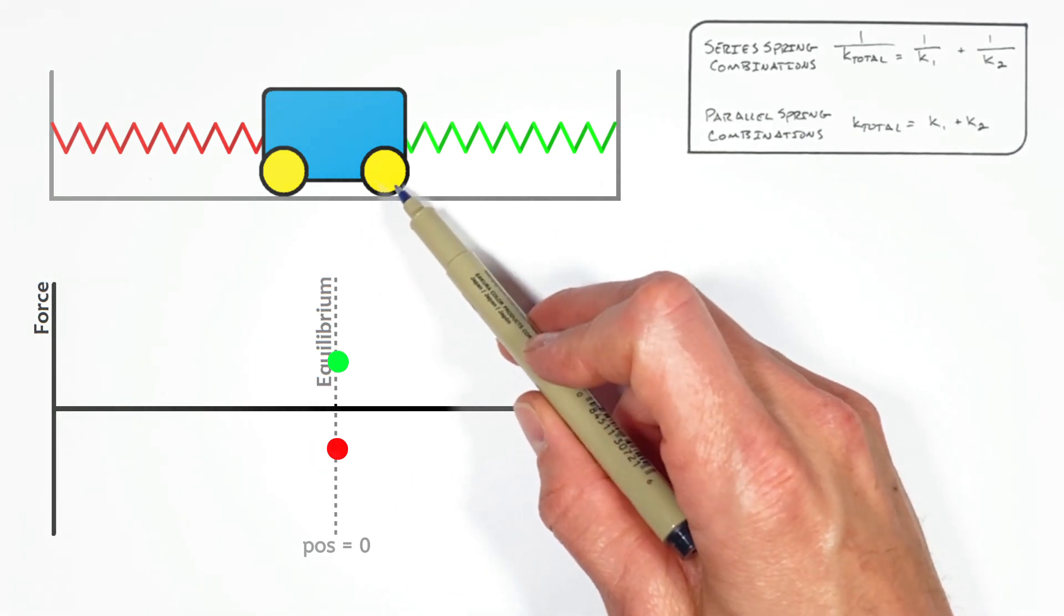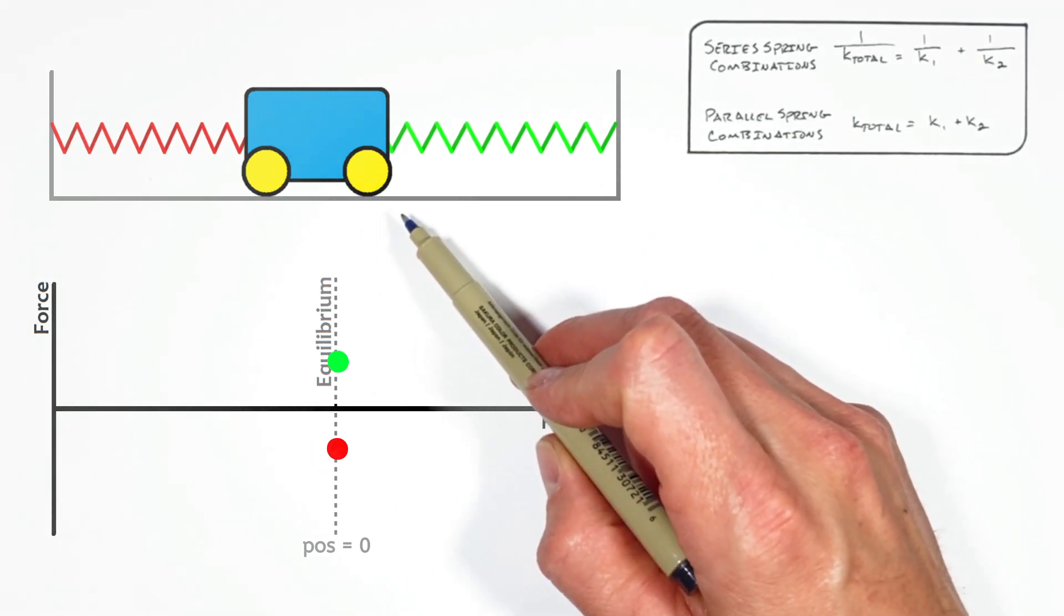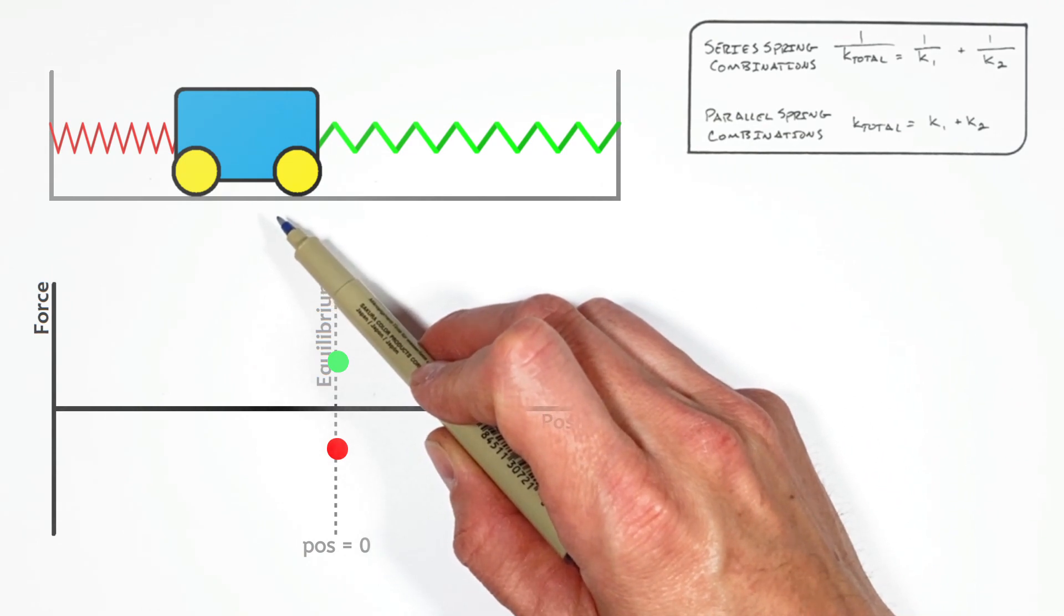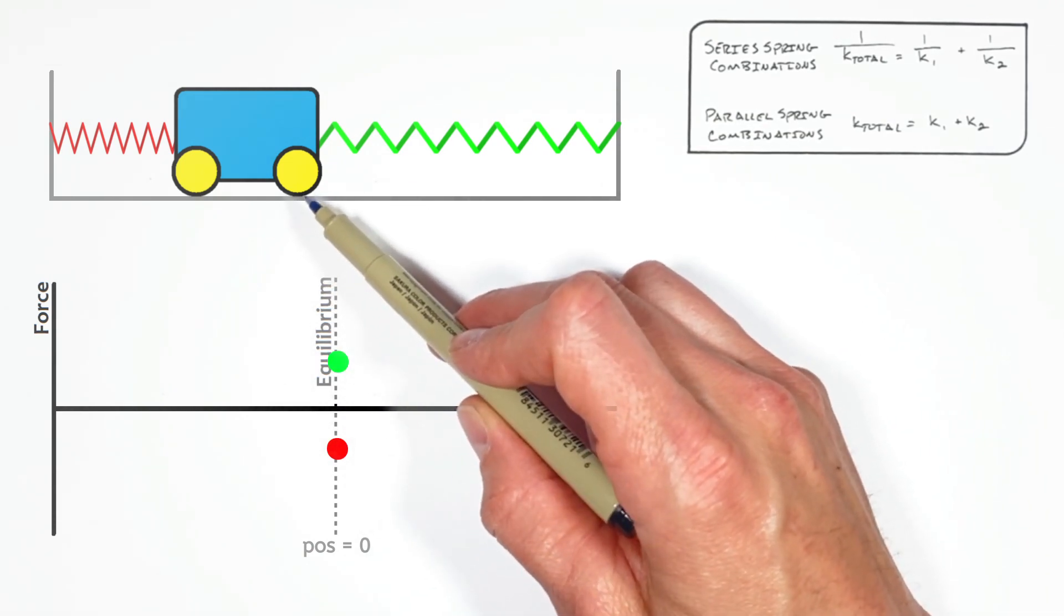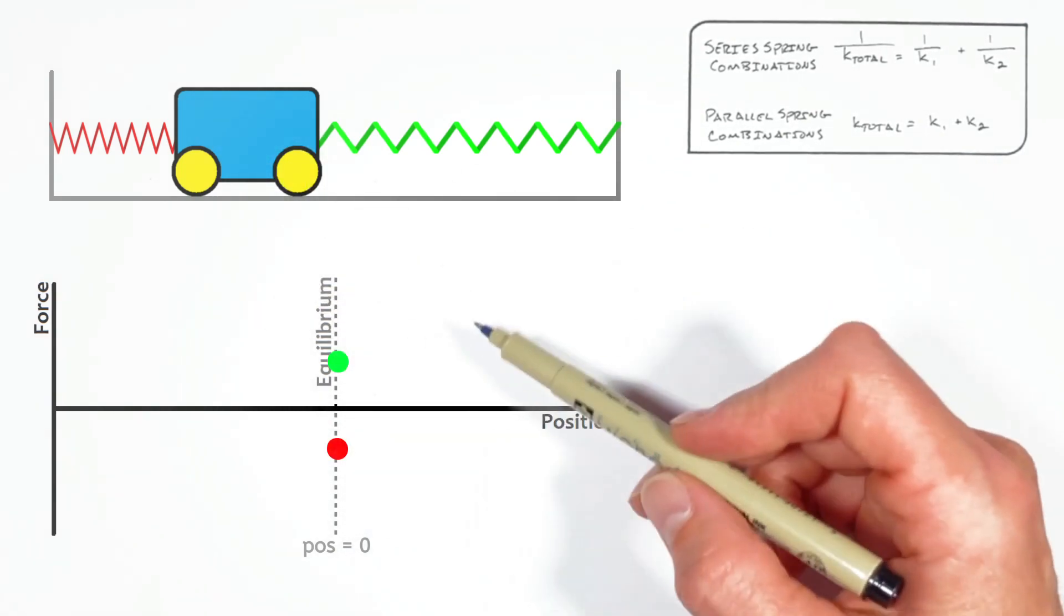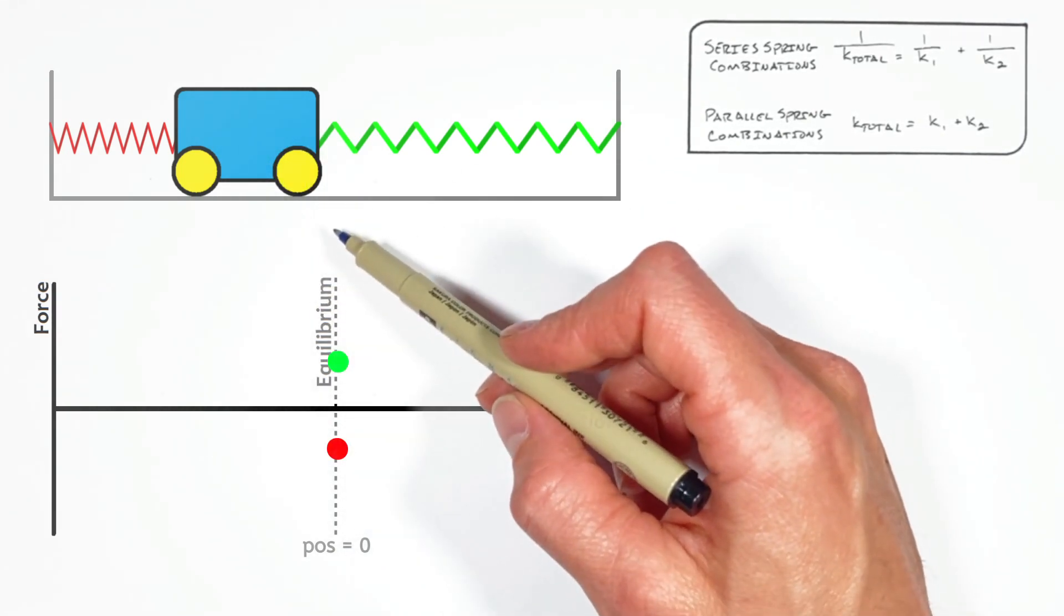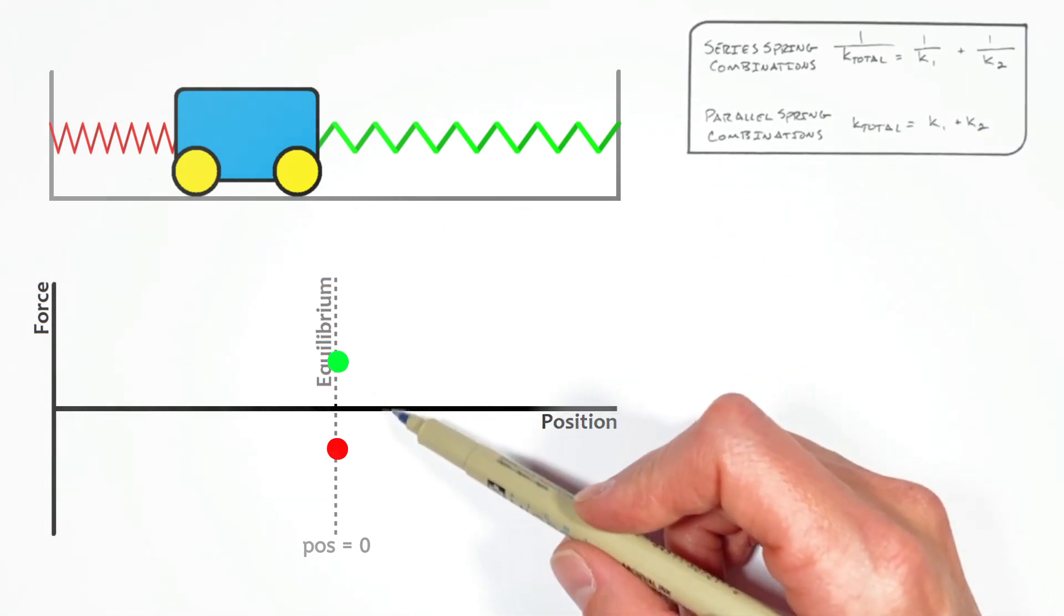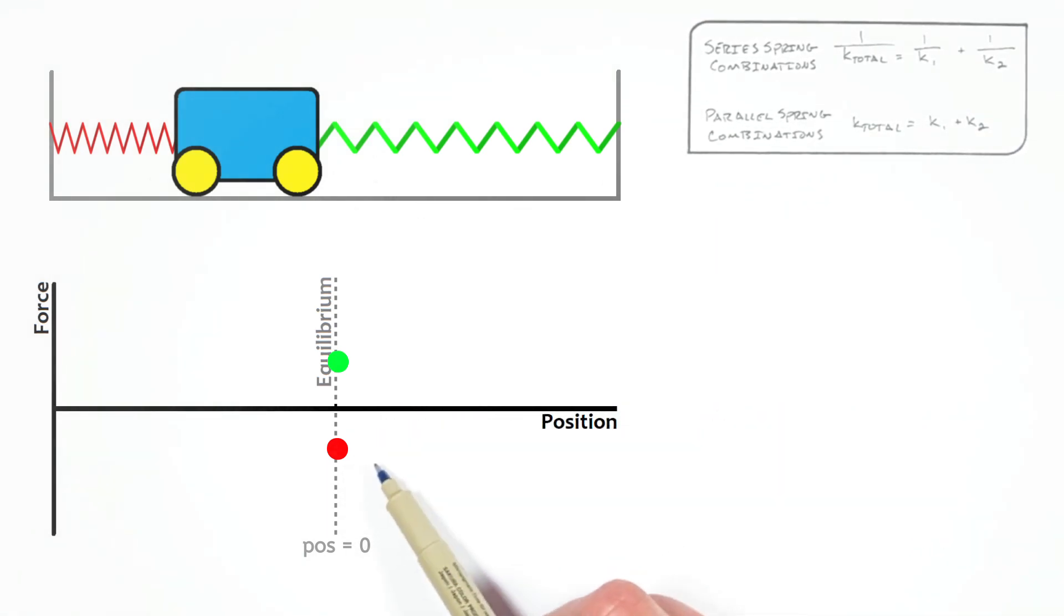But imagine what would happen if we were to take this block right here and push it to the left. As the block is pushed to the left, this spring over here on the left side is actually going to get shorter. That is to say, it's not going to be pulling as hard, or it won't be stretched so far. So on our graph, we'll see as we move to the left, the force by the spring on the left is going to decrease.